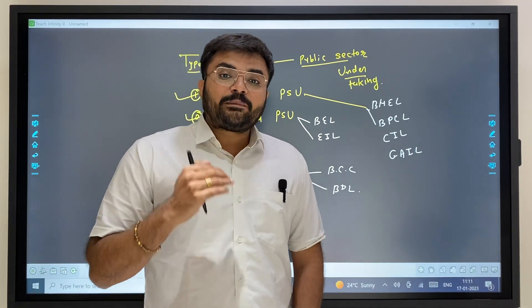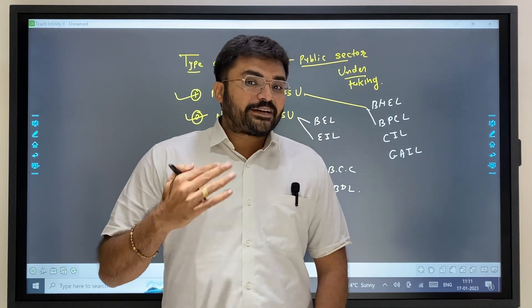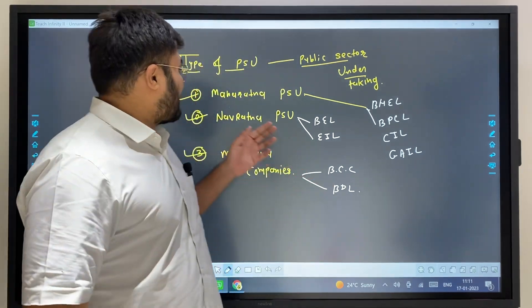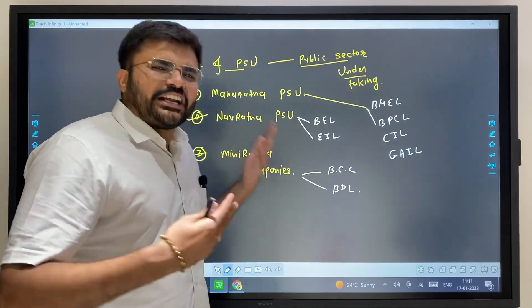There are other categories under government norms. If you want to know about government norms, please comment in the comment box and we will make a video. For example, there are many PSU companies like BEL, BPCL, CIL, and others.